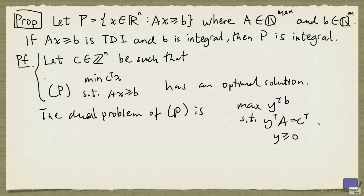So for any such c, the optimal value is an integer. And by our previous result, we know that P is integral. And that completes the proof.